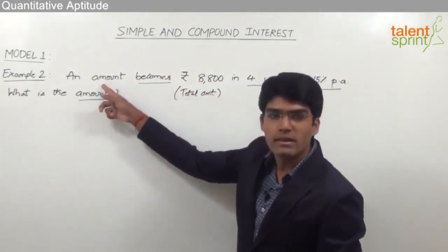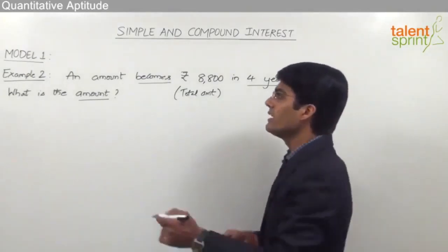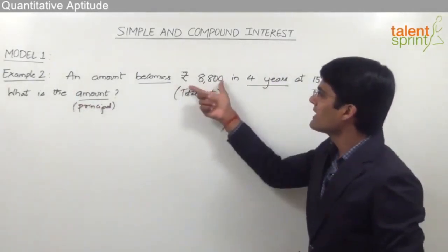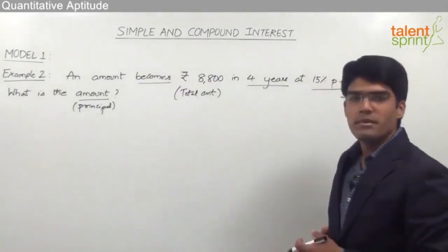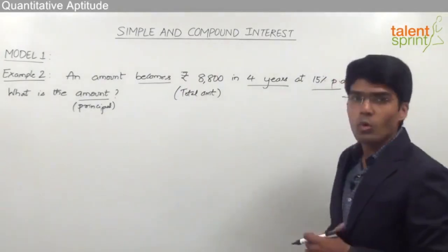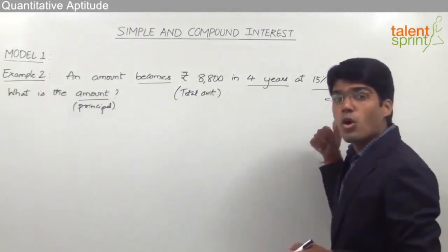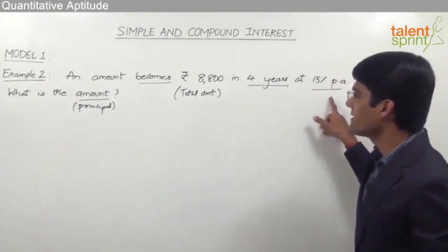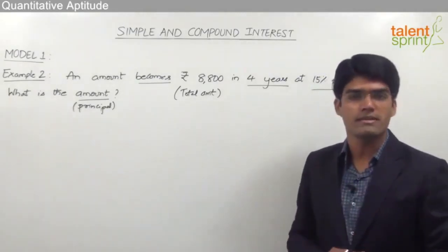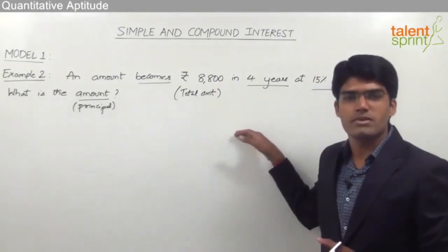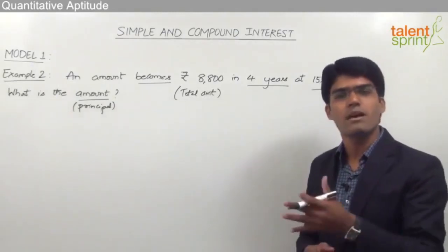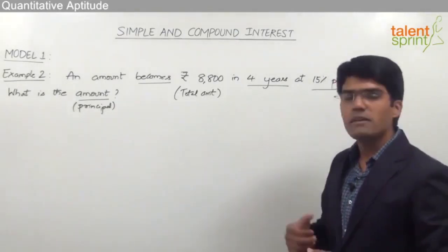So here, 8,800 is the total amount, and we need to find the principal. The principal becomes 8,800 in four years at 15% per annum. The second point: nowhere in the question is it specified whether this is simple interest or compound interest. When nothing is specified, we always go for simple interest calculation.